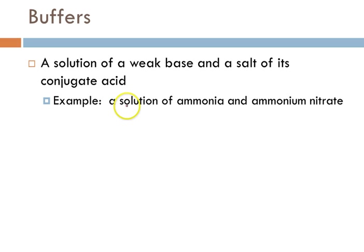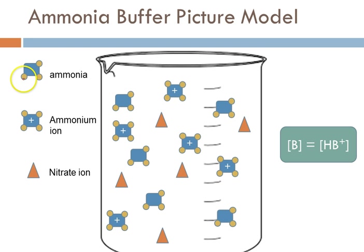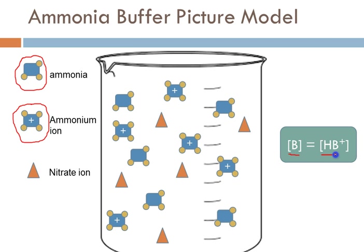Another way to prepare a buffer is to take a solution of a weak base and then add an ionic compound, a salt, that contains its conjugate acid as the cation. For example, we might take an ammonia solution and add in some ammonium nitrate, and that would also make a buffer. In this picture model, I have five neutral ammonia molecules, and I add ammonium nitrate as the conjugate acid salt. I have ammonium ions, which are charged, and nitrate ions as the counter ion — the nitrate is a spectator. Again, I chose to set this buffer up so that the concentration of the weak base equals the concentration of the conjugate acid.